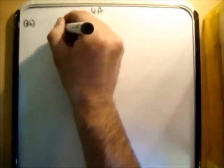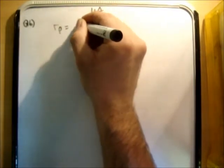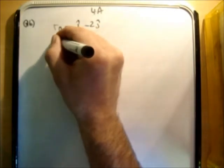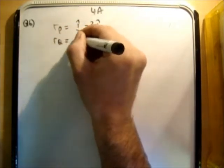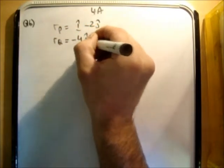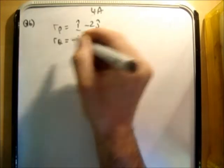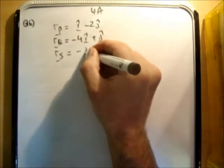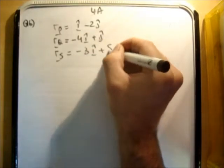So I'm actually not going to draw the diagram because that's pretty elementary at this stage. I'm just going to note that we had RP is equal to I hat minus 2 J hat, RQ is equal to negative 4 I hat plus J hat, and RS is equal to negative 3 I hat plus 5 J hat.